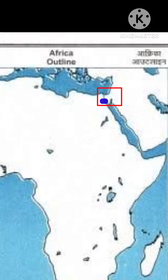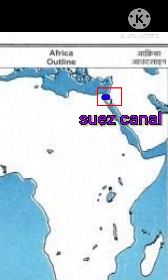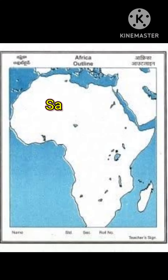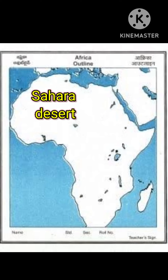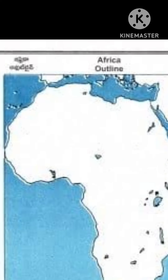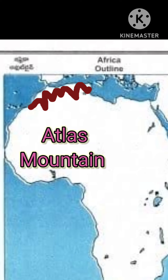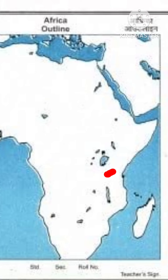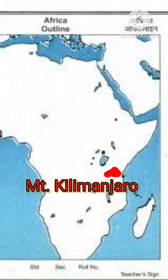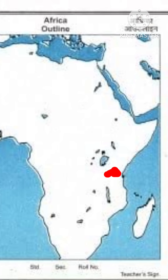The next important place is the Suez Canal. Sahara Desert is the world's largest desert. And Atlas Mountain is the important mountain range in Africa. Mount Kilimanjaro is the highest peak in Africa.